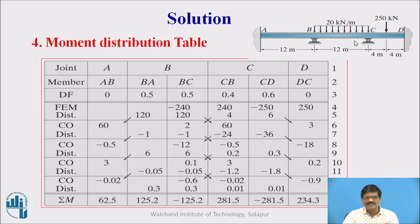Then the fixed end moments also we determined that is to be substituted here. So fixed end moment will be only for BC span, so BC and CB. It is minus 240 plus 240. And of course it is for CD also since we have a load over CD. Minus 250 plus 250.